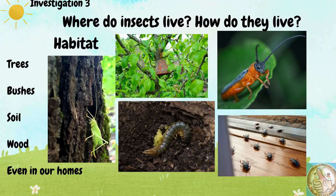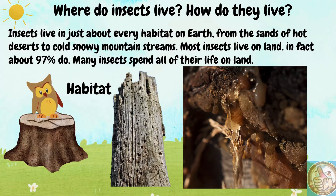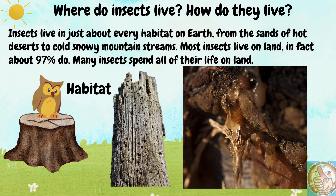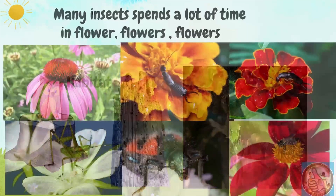Where do insects live? How do they live? They live in trees, bushes, soil, wood, and even in our homes. Insects live in just about every habitat on earth, from the sands of hot deserts to cold snowy mountain streams. In fact, about 97 percent of insects live on land, and many spend all of their life there.